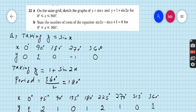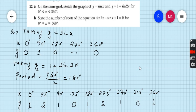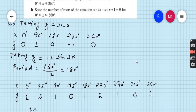This is the table of y equals sin x. Now taking the second equation which is y equals 1 plus sin 2x. For this equation we must find the period of the function in order to make the table. The formula for the period is 360 degrees divided by b, where b is the coefficient of x. In this equation the coefficient of x is 2, so 360 divided by 2 is 180 degrees, therefore the period is 180.